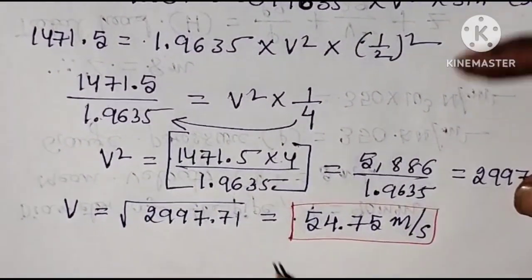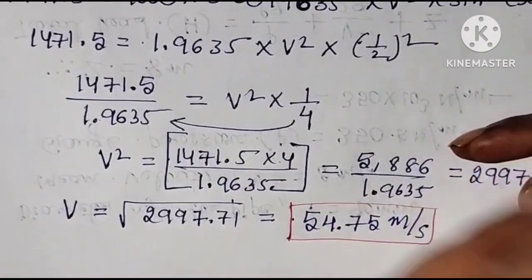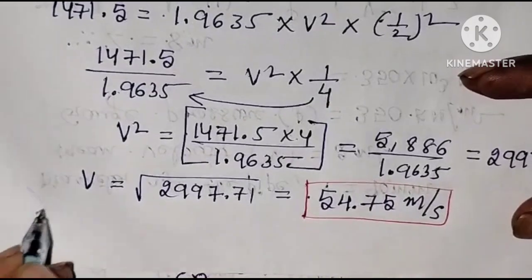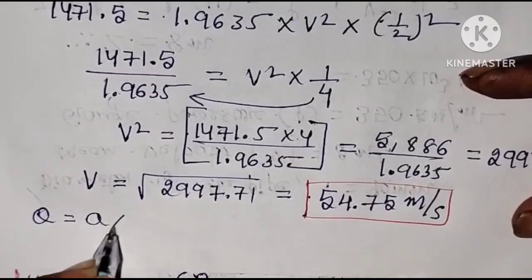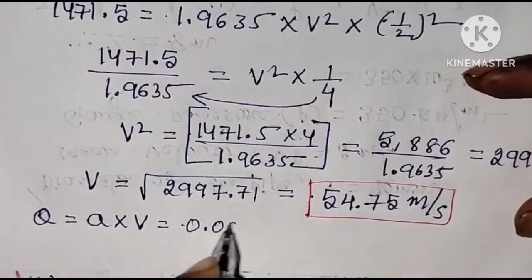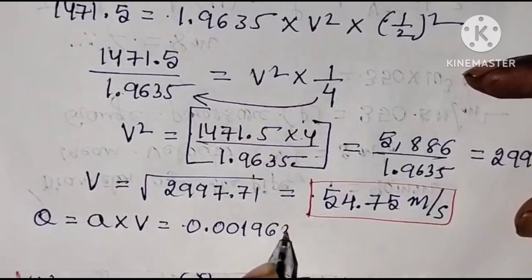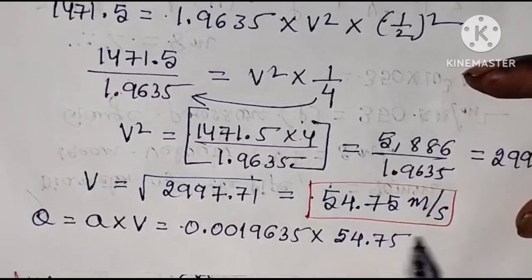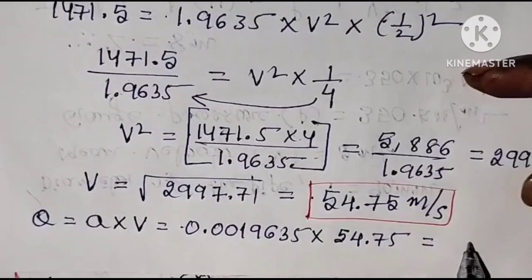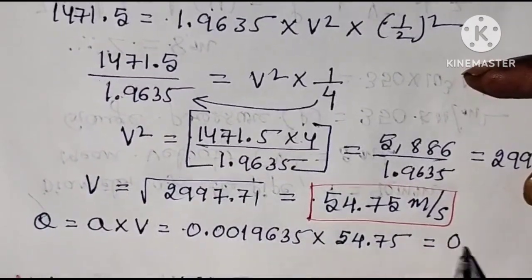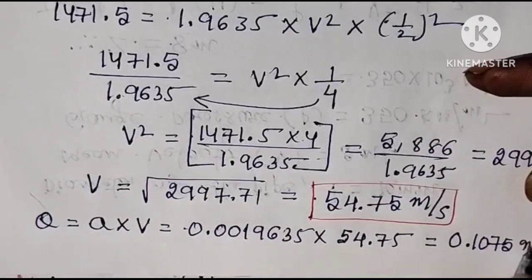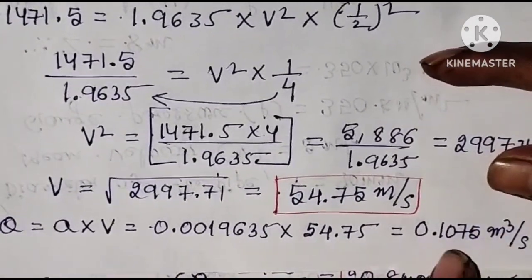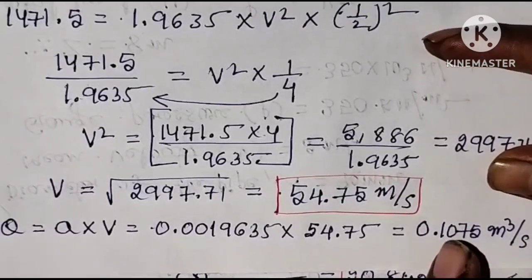Now find the flow rate. Q = area of jet × velocity of jet = 0.001963 × 54.75. Multiplying gives Q = 0.1075 m³/s. The unit of discharge is meters cubed per second.